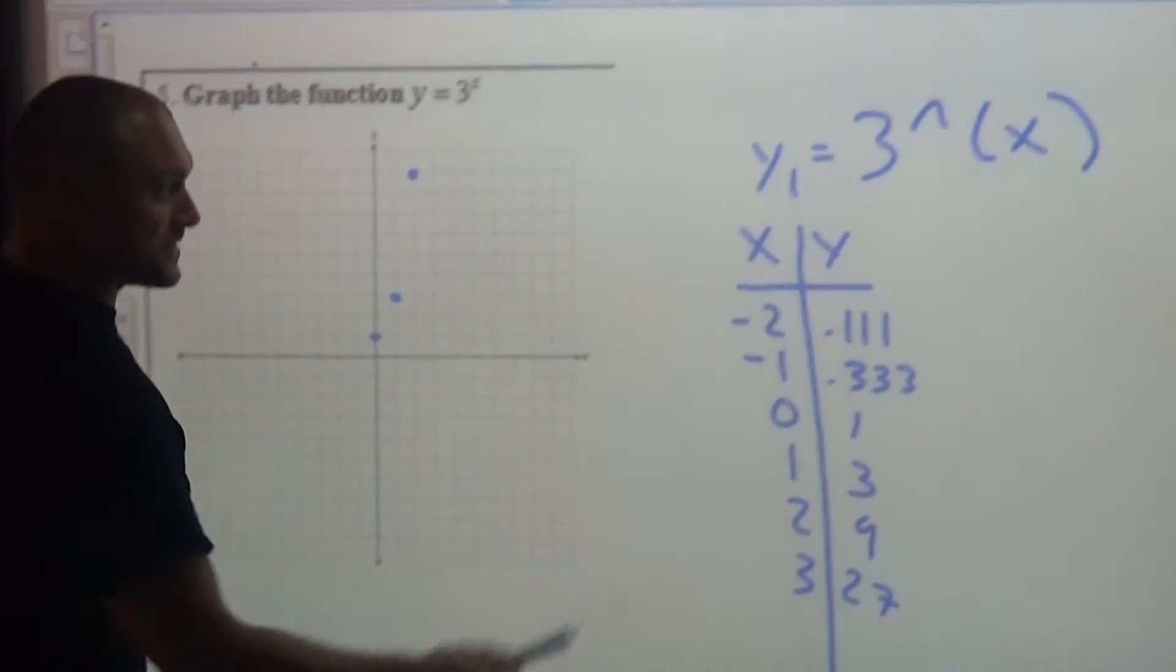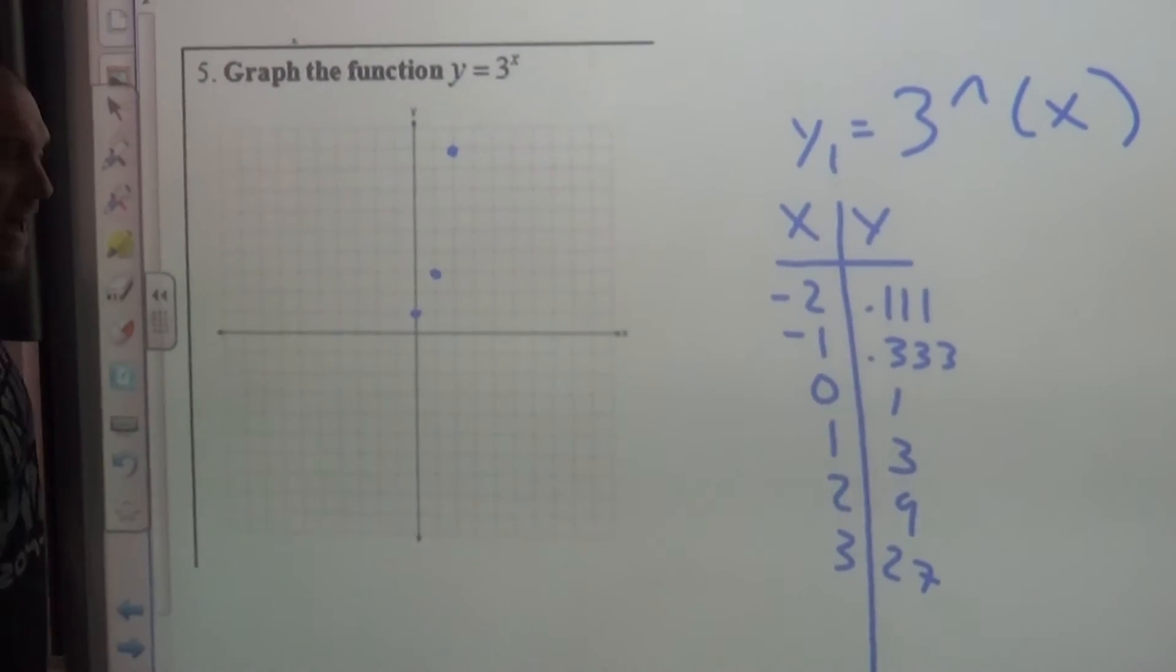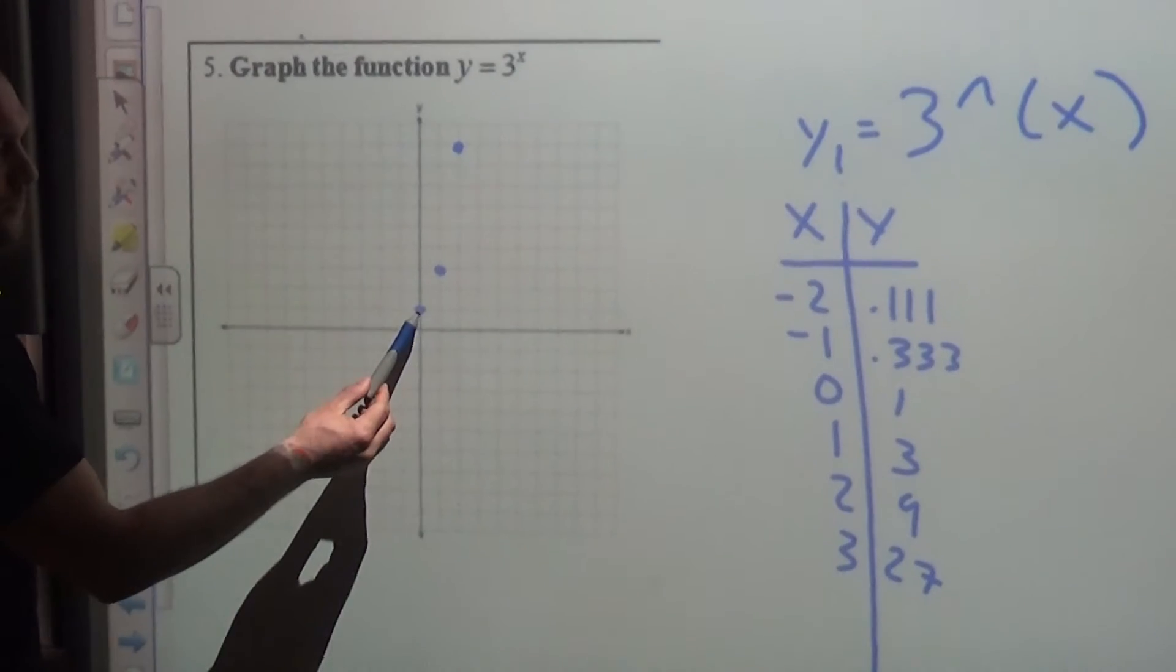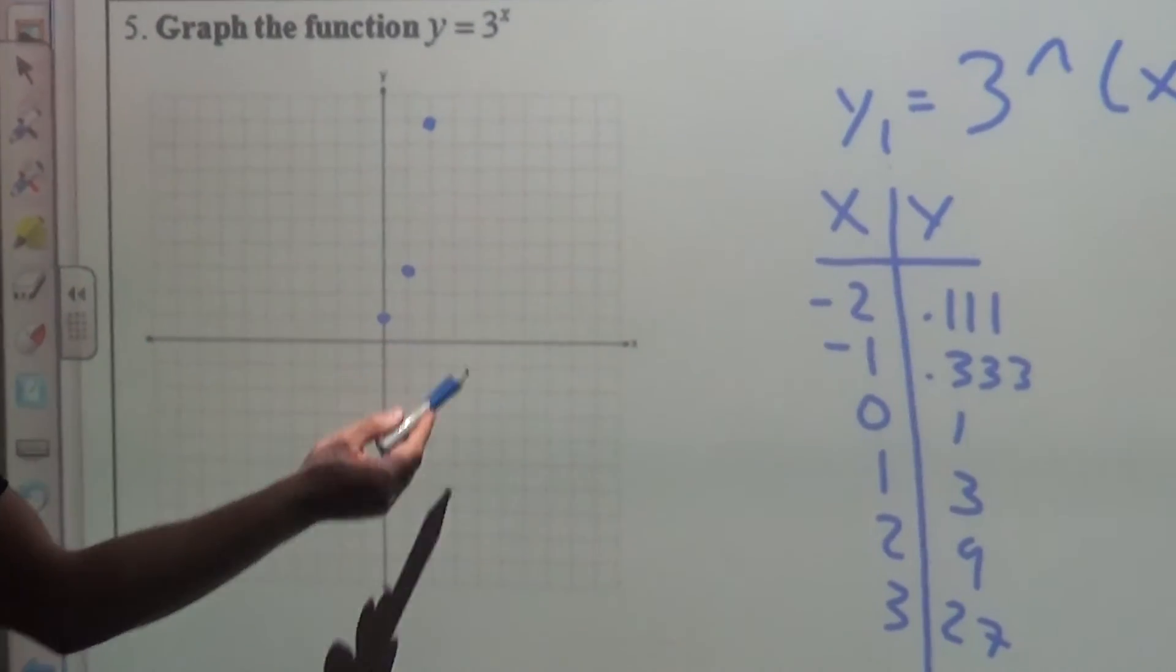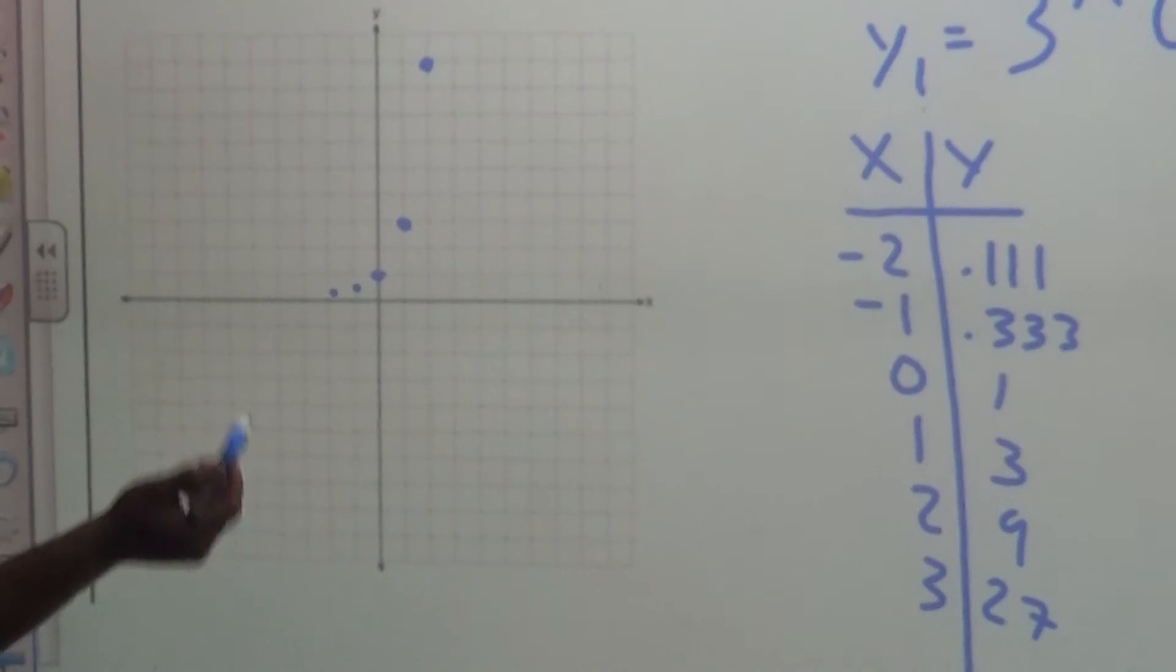Now, here we have some decimals. We can just sort of estimate where those are. So here, I graph the three whole number points, and then at negative 1, maybe right here and right here.